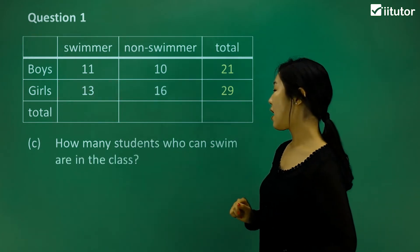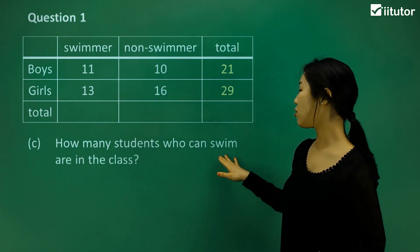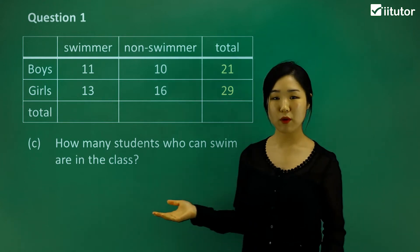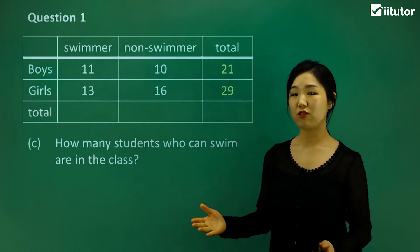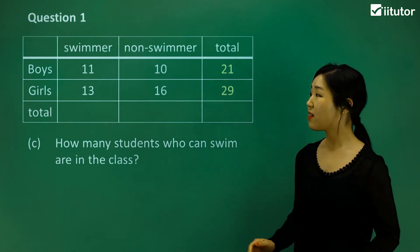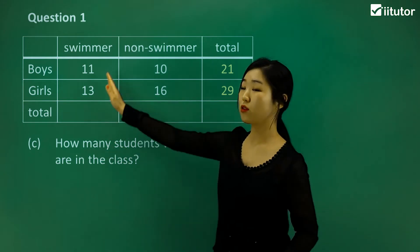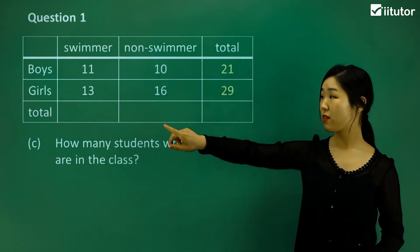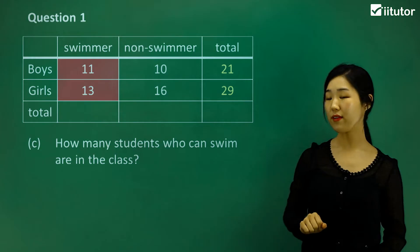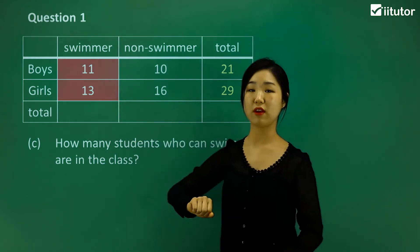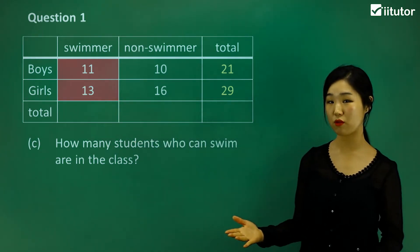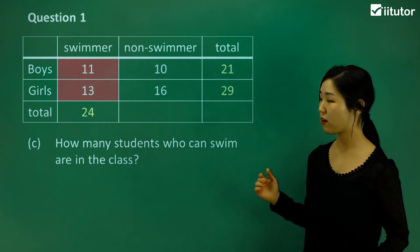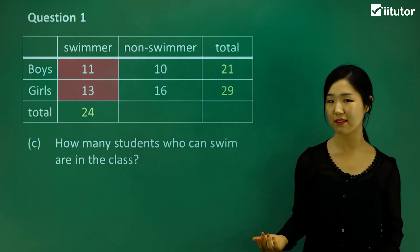Part C asks: how many students who can swim are in the class — whether they're boys or girls? We look vertically under the swimmer column. Swimmers for boys is 11, and swimmers for girls is 13. Together that gives us a total of 24 swimmers: 11 plus 13 equals 24.